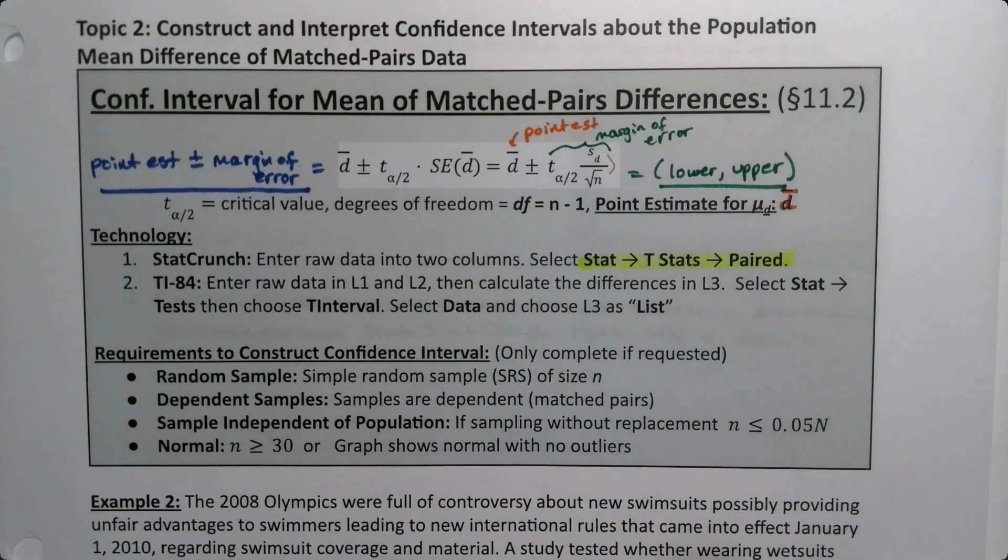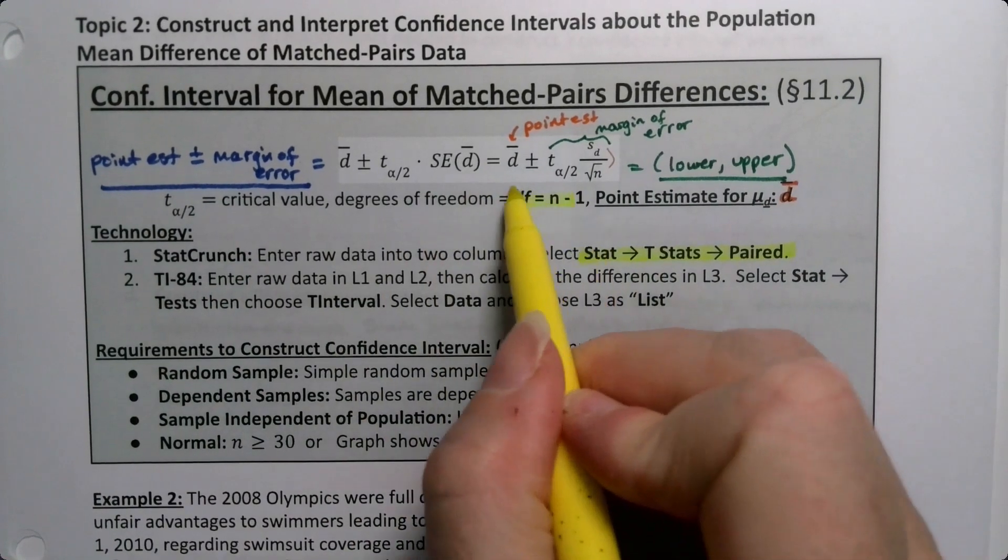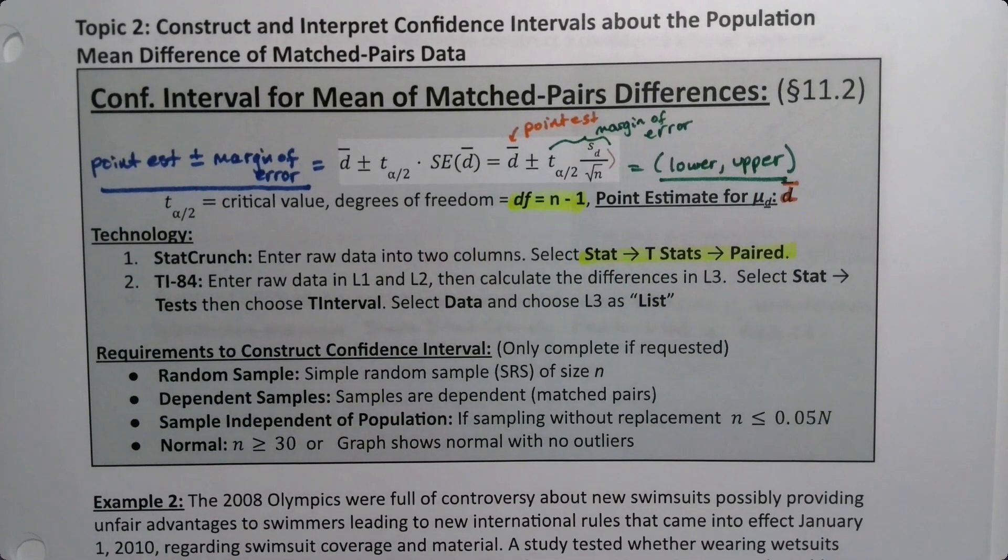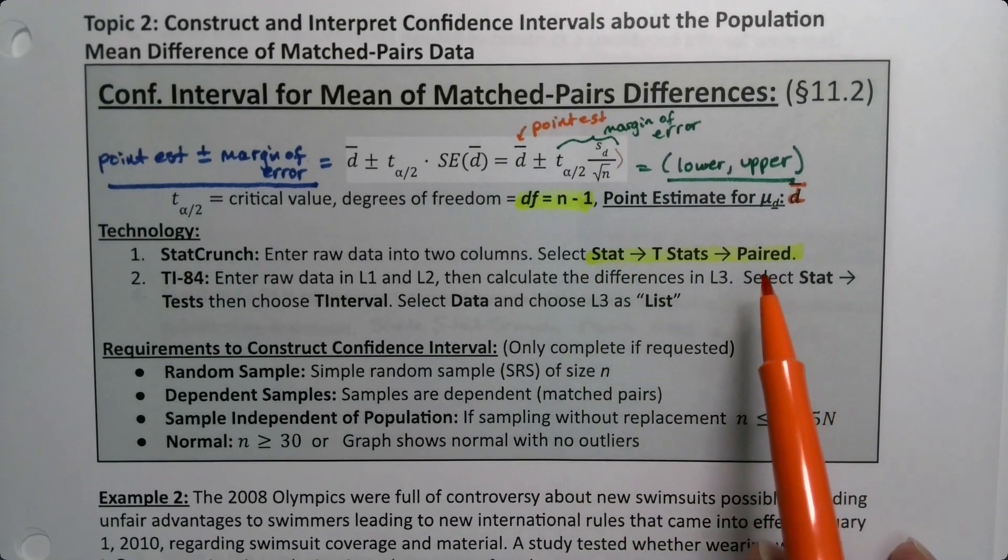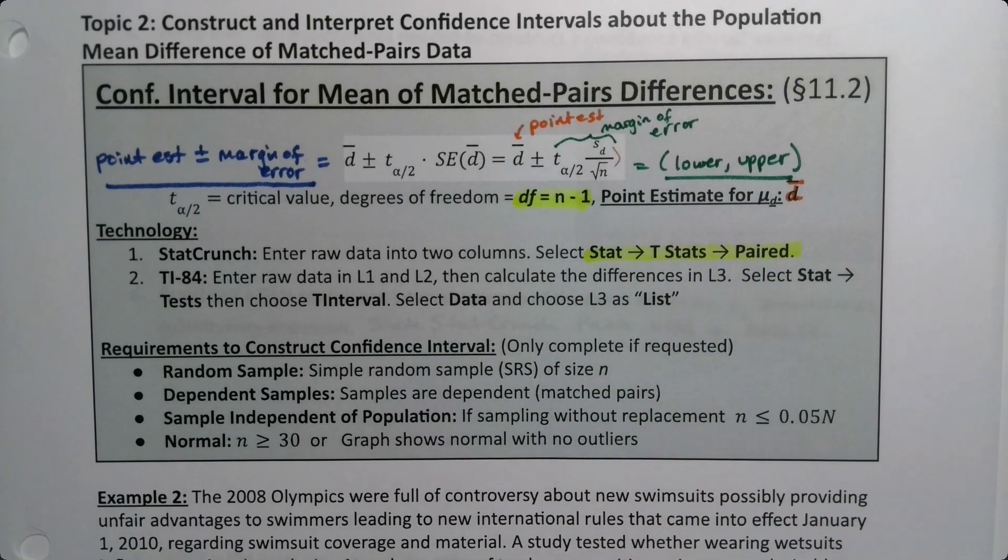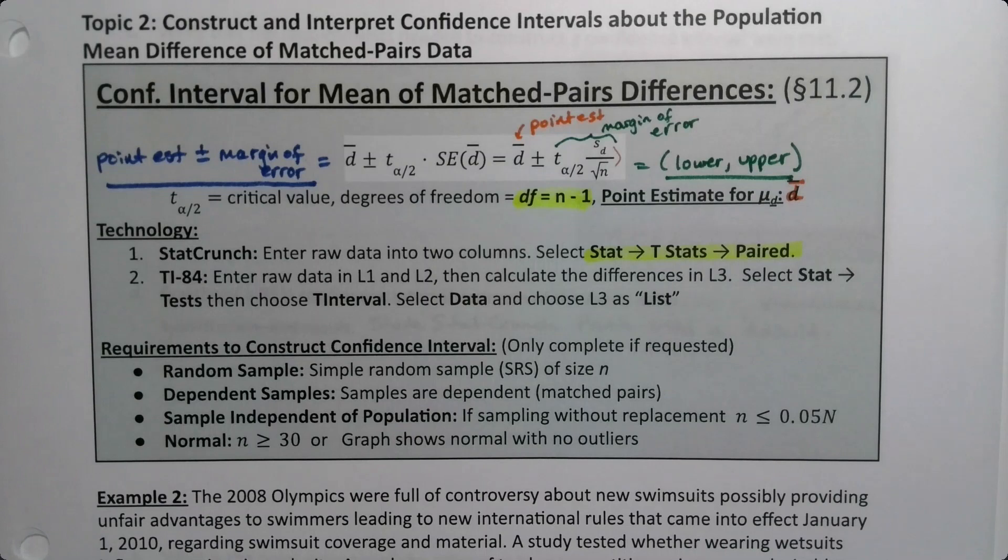Never forget the degrees of freedom is n minus 1, we learned that in chapter 9 and it's still the case. We're not going to do these by hand, we're generally going to make StatCrunch do the work for us with Stat, T Stats, Paired, the same place we went for a hypothesis test but we're going to be using it for a confidence interval.